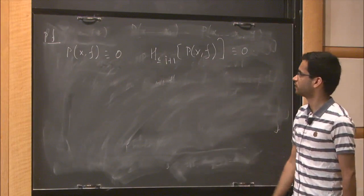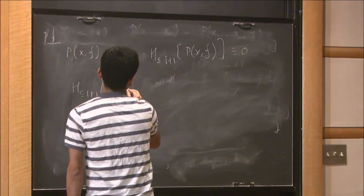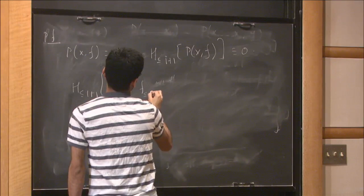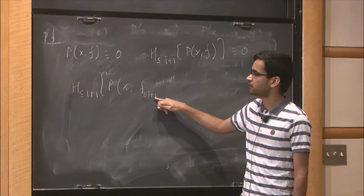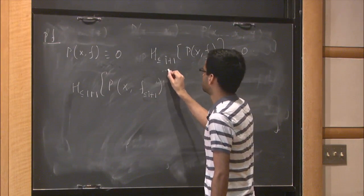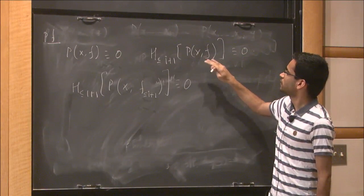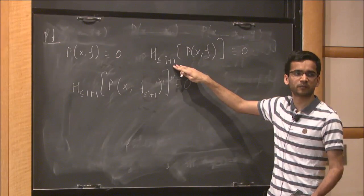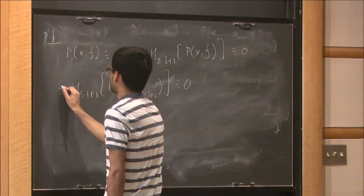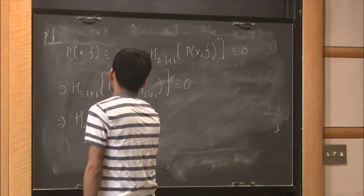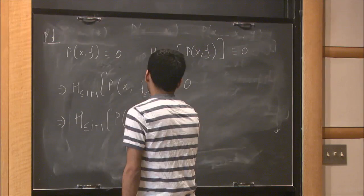Let's massage it a bit. This is P(x, ...) where we look at the homogeneous component of f of degree at most i+1. Since we're only interested in monomials of degree at most i+1, any monomial in f of degree larger than i+1 does not contribute. So in particular, I can write some garbage of high degree and nothing changes. Let me break it further — I write f of y plus 1.